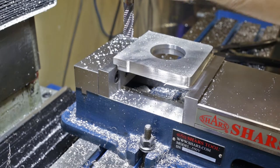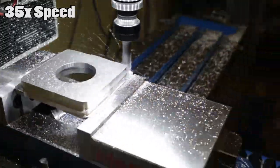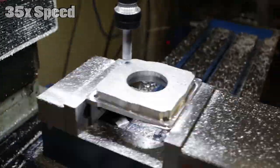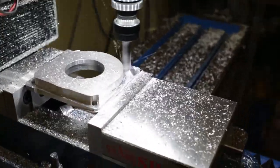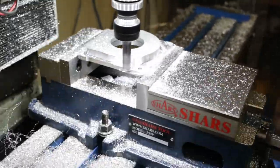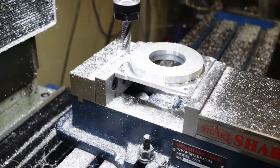Thankfully, the rest of the part was pretty uneventful. I went and used the rougher again and used the adaptive clearing in HSM Express and carved out all the material that I needed to. And then after that was done, I used a half inch four flute end mill and cleaned everything up.